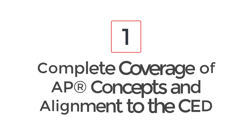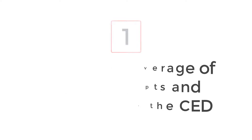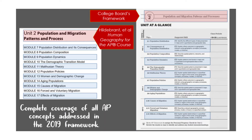Number 1: Complete coverage of AP concepts and alignment to the CED. The text provides complete coverage of all AP concepts addressed in the 2019 course and exam description. The 7 units in the book match the 7 units in the CED, with modules addressing each topic outlined in the framework.